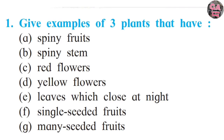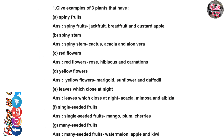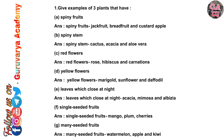Question number one: Give examples of three plants that have the following. A. Spiny fruits: jackfruit, breadfruit, and custard apple.